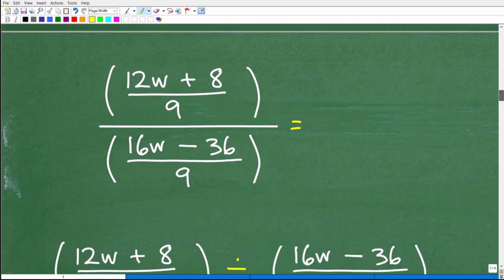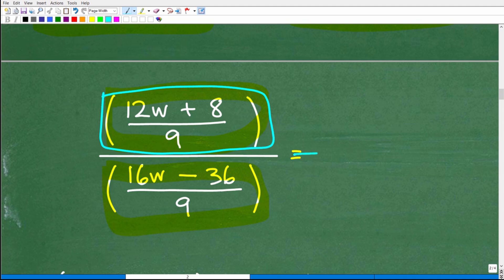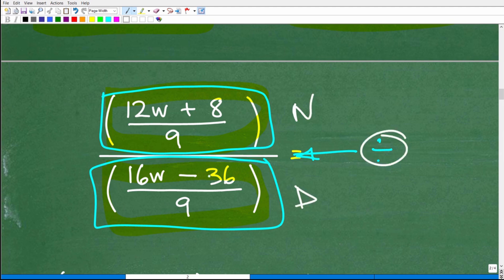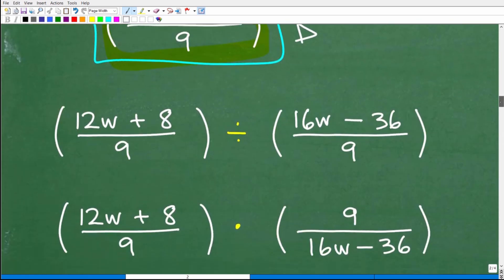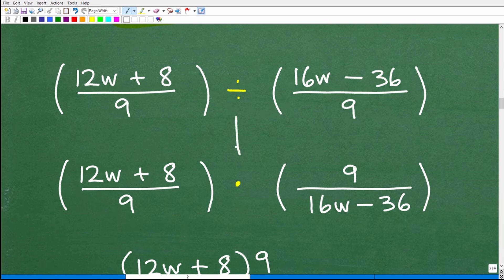Let's take a look at the situation. We have this thing over this, but a better way to interpret this is this numerator right here. This fraction bar is the division symbol. So it's this divided by this. So let's write it that way. The numerator is being divided by the denominator. Instead of writing it this way, let's go ahead and write it this way. We have 12w plus 8 over 9 divided by 16w minus 36 over 9, because when you're dividing fractions, you want to write it in this manner.